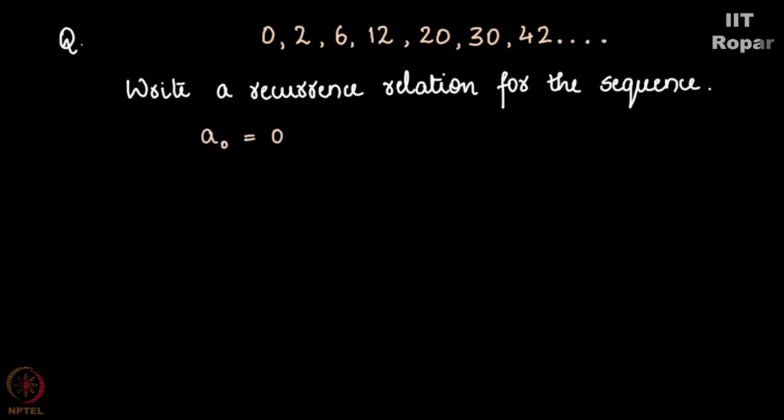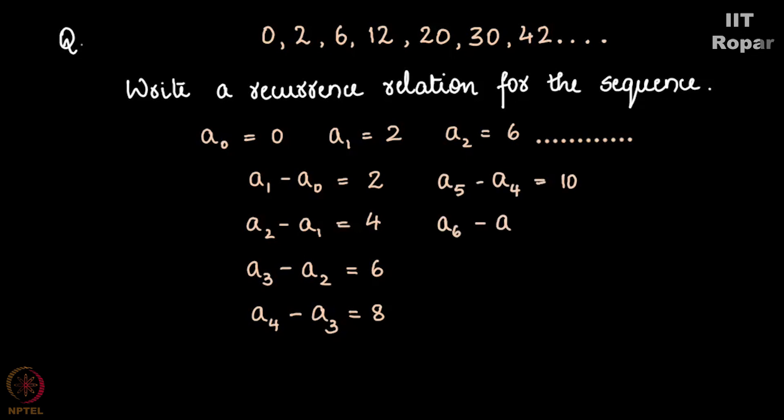A0 = 0, A1 = 2, A2 = 6. A1 - A0 = 2, A2 - A1 = 4, A3 - A2 = 6, A4 - A3 = 8, A5 - A4 = 10, A6 - A5 = 12 and so on. Now take a pause and observe the differences. What do you see?